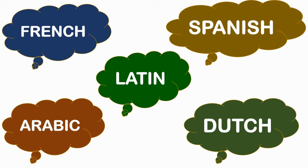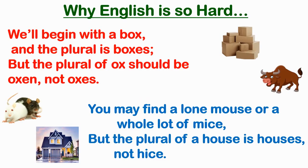So why is the English language considered to be difficult? Let's see the poem 'Why English is so hard?' and understand why English is difficult or hard to learn. First we will read the poem. 'Begin with a box and the plural is boxes. But the plural of ox should be oxen, not oxes. You may find a lone mouse or a whole lot of mice. But the plural of house is houses, not heist.'